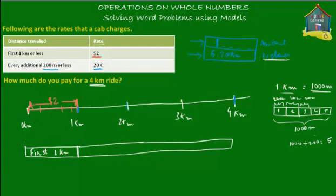No matter how much distance you travel from zero to one kilometer — whether you travel the whole kilometer or less — you'll always pay $2 to the cabbie. So this is your first $2. That's your first one kilometer on the distance line. Now for the next three kilometers: you've already traveled the first kilometer and you'll be traveling a total of four kilometers. Four kilometers minus one gives you the next three kilometers.